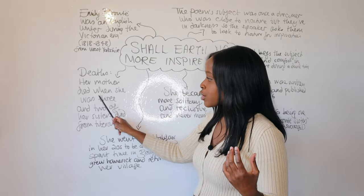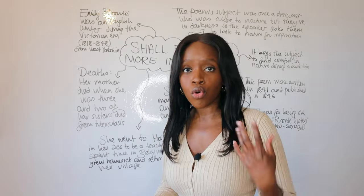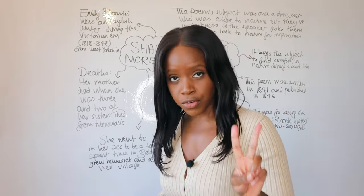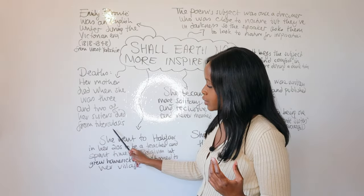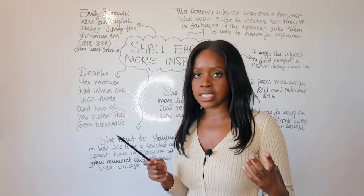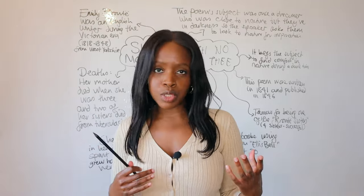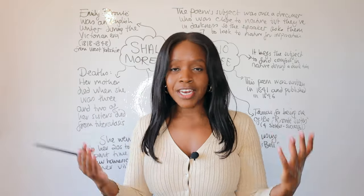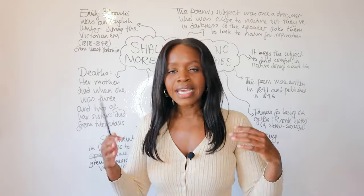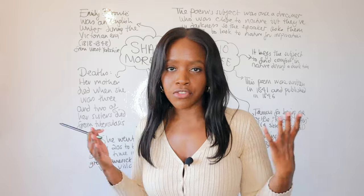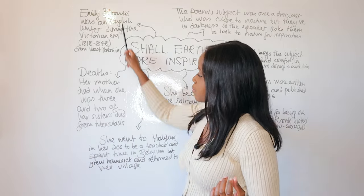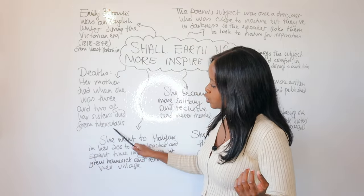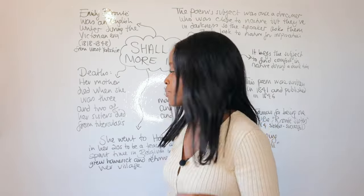Her mother died when she was just three years old, and then two of her sisters also died from tuberculosis. This was a disease that used to really ravage people's bodies — even George Orwell, one of my personal favourite writers, also died from TB. So Emily Brontë was very much no stranger to this disease.